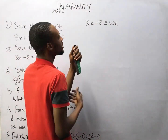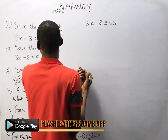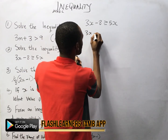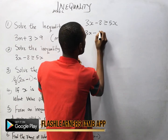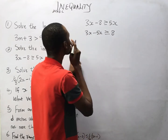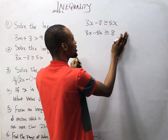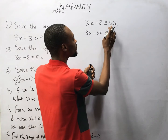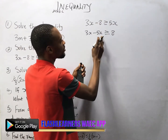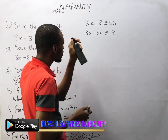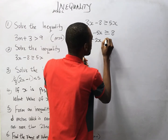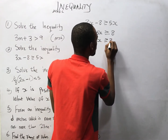For the second question, collecting like terms, we are left with 3s minus 5s is greater than or equal to 8. Because as minus 8 crosses the inequality sign it becomes plus 8, and as 5s crosses the inequality sign it becomes minus 5s. So 3s minus 5s gives minus 2s, which is greater than or equal to 8.